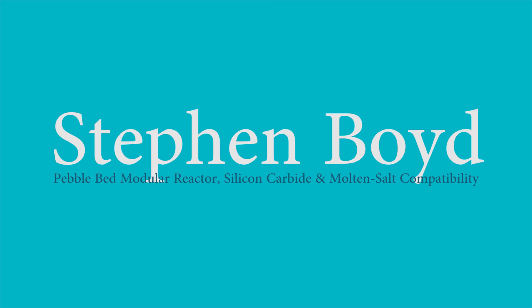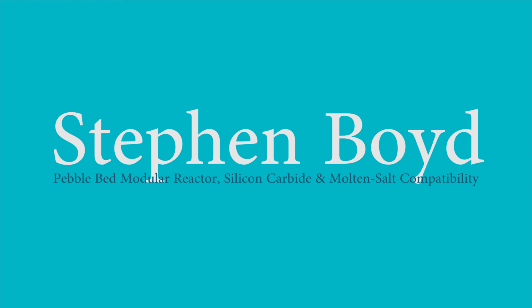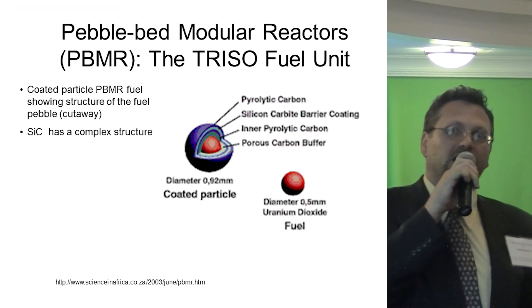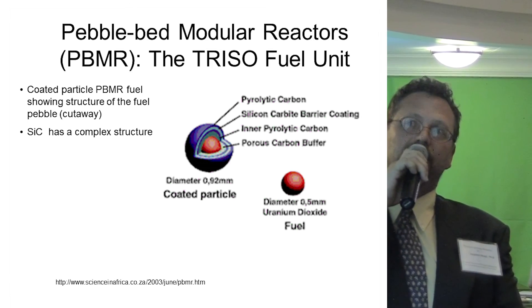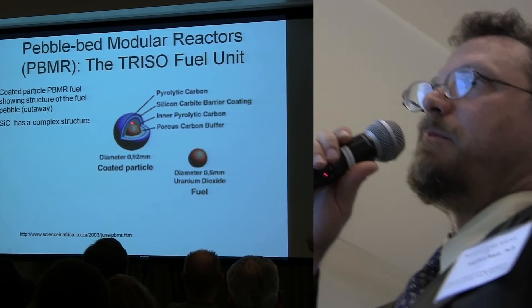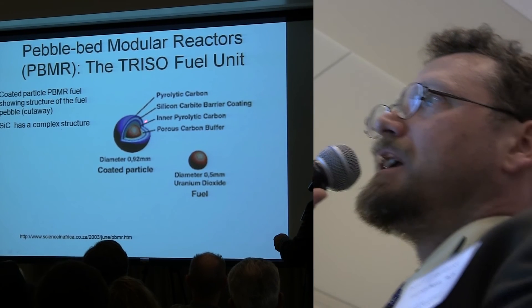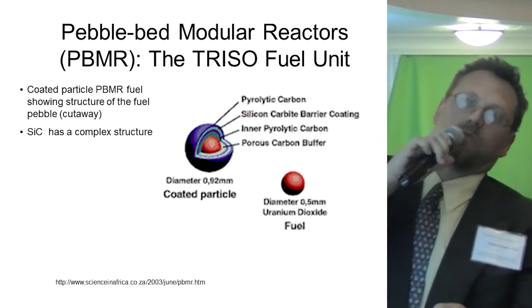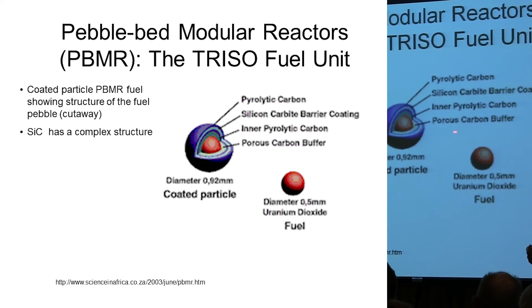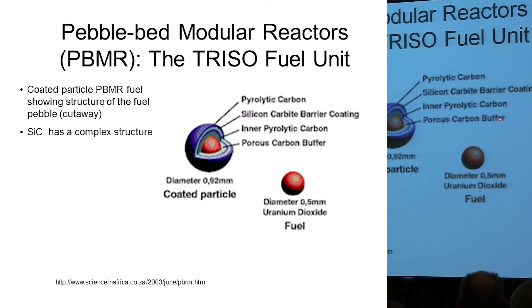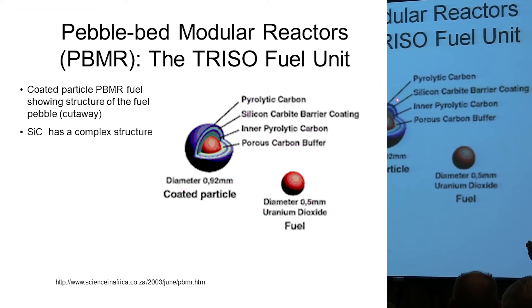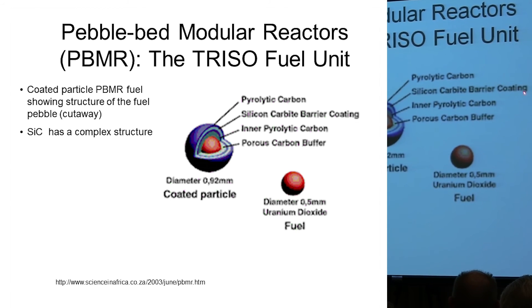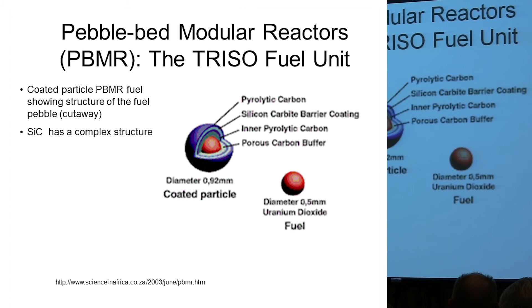One interesting design for nuclear reactors is the pebble-bed modular reactor. At the heart of it is the TRISO fuel unit. Here's the UO2 pellet that's inside — or pebble — and here we get to the meat of the matter. We've got porous carbon, we've got an inner layer of pyrolytic carbon, we've got a silicon carbide barrier, and we've got an outer layer of pyrolytic carbon.